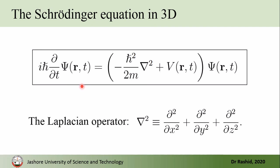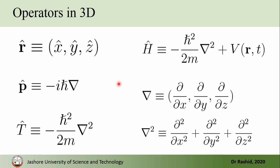In three dimensions the Schrödinger equation is written with bold r (the position vector) instead of x. Here ∇² is the Laplacian operator containing all three components. We also have the operators in 3D form: the position operator involves all three components; the momentum operator is −iℏ∇, where the gradient has all three differential components; the kinetic energy operator involves the Laplacian; and the Hamiltonian operator is the kinetic energy plus the potential.